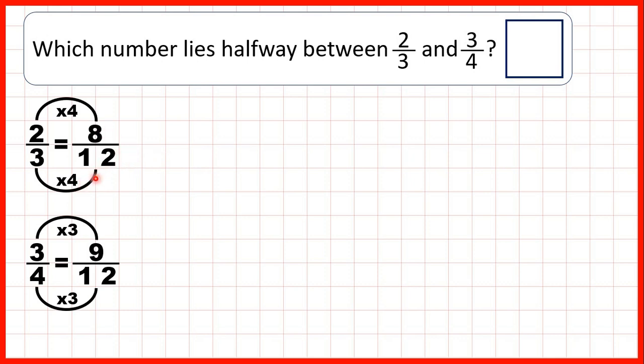So instead, rather than using the lowest common multiple of three and four, let's use a different larger common multiple. Twenty-four is in the three and the four times tables, so let's find equivalent fractions which have a denominator of 24.